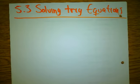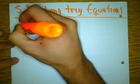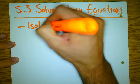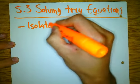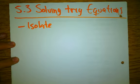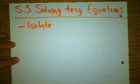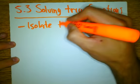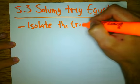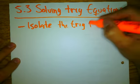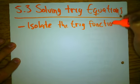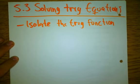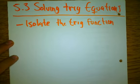What are we doing when we're solving an equation? We are going to isolate. Back in Algebra 2, you would isolate typically x, or isolate whatever variable you were dealing with. In our case, you're going to isolate the trig function. We're going to isolate the trig function.